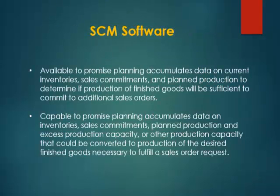Supply chain management software includes available-to-promise planning, which accumulates data on current inventories, sales commitments, and planned production to determine if production of finished goods will be sufficient to commit to additional sales orders. It is also capable of capable-to-promise planning, which accumulates data on inventories, sales commitments, planned production, and excess production capacity, or other production capacity that could be converted to the production of the desired finished goods necessary to fulfill a sales order request.